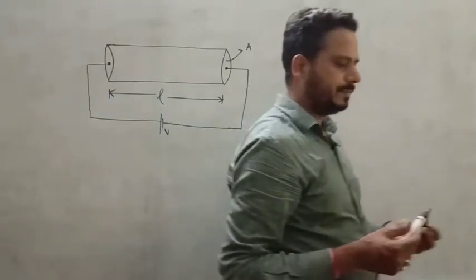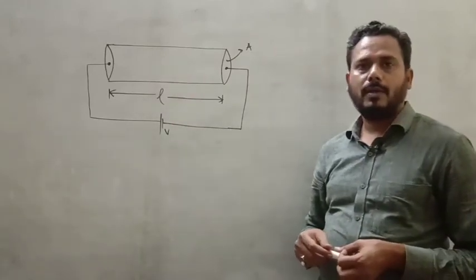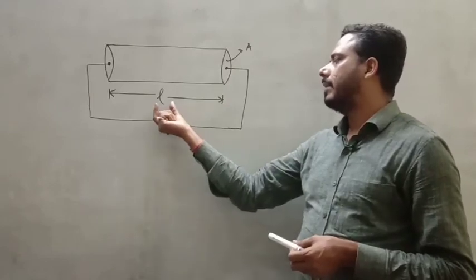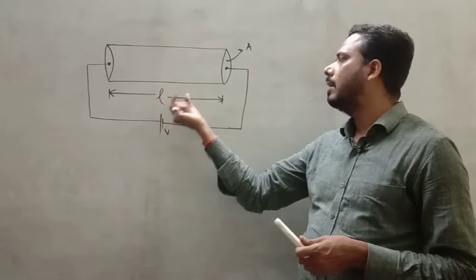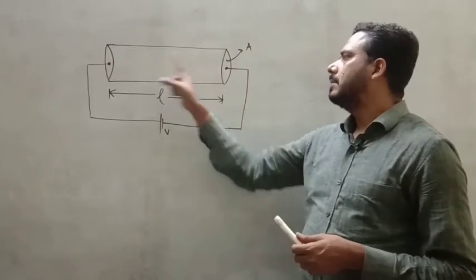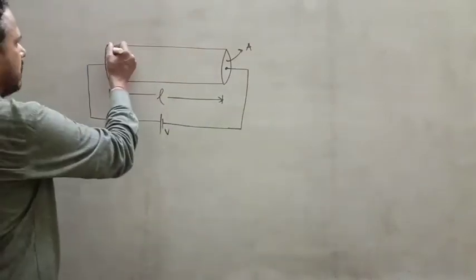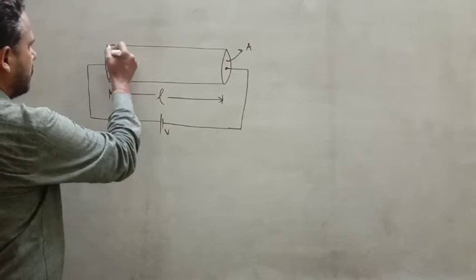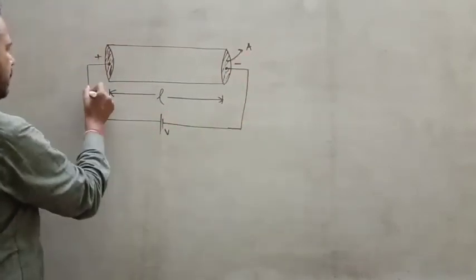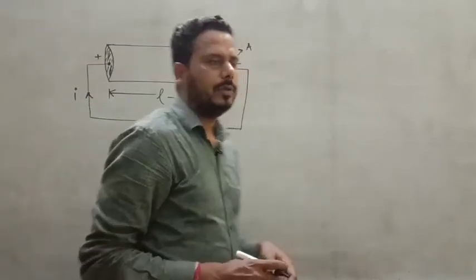Inside this conductor there are a lot of electrons. This is a very small length L with a small cross-sectional area A, and this length of conductor is under a potential difference V. This surface behaves like a positive terminal and the other like a negative terminal, because current is flowing in this direction.